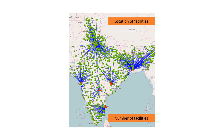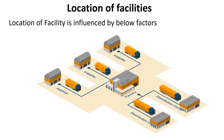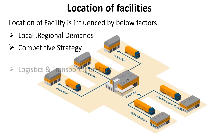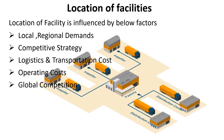The main things to be considered in design of a supply chain network are location of facilities and number of facilities. Location of a facility is influenced by factors such as local and regional demands, competitive strategy, logistics and transportation cost, operating costs, global competition, regional considerations, taxation, and political stability.